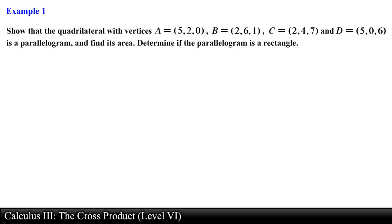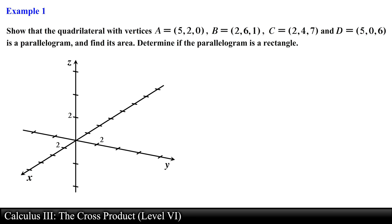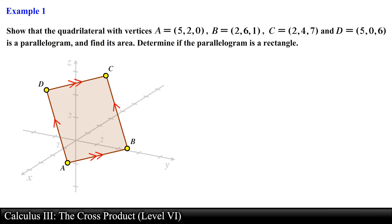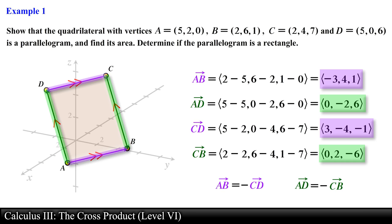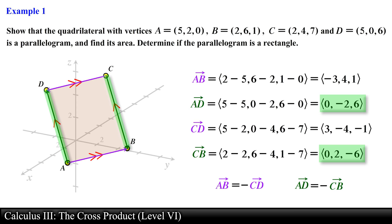Now let's go over examples using these geometric properties. First: show that the quadrilateral with vertices a, b, c, and d is a parallelogram and find its area, then determine if it is a rectangle. We are given the coordinates of four distinct points. We show they form a parallelogram by demonstrating both pairs of opposite sides are parallel, finding the vector representation of sides ab, ad, cd, and cb. Notice that vector ab equals the negative of vector cd, and vector ad equals the negative of vector cb, meaning opposite sides are parallel since the vectors are constant multiples of one another.